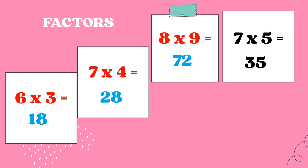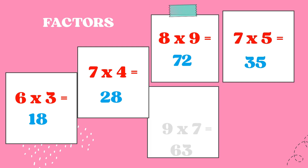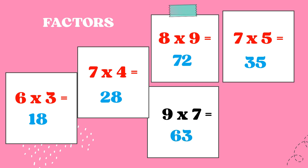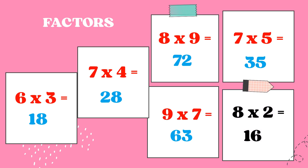Seven times five is equal to 35, and the factors of 35 are 7 and 5. Nine times seven is equal to 63, so the factors of 63 are 9 and 7. Eight times two is equal to 16, and the factors of 16 are 8 and 2.